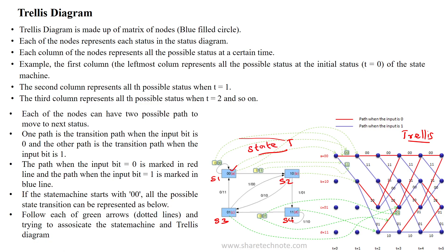Each of the nodes represented in the trellis diagram represents its own status, and each column represents the status over a time period — time period 1, time period 0, and so on. Each column is represented over time period t, and each node has two possible paths.